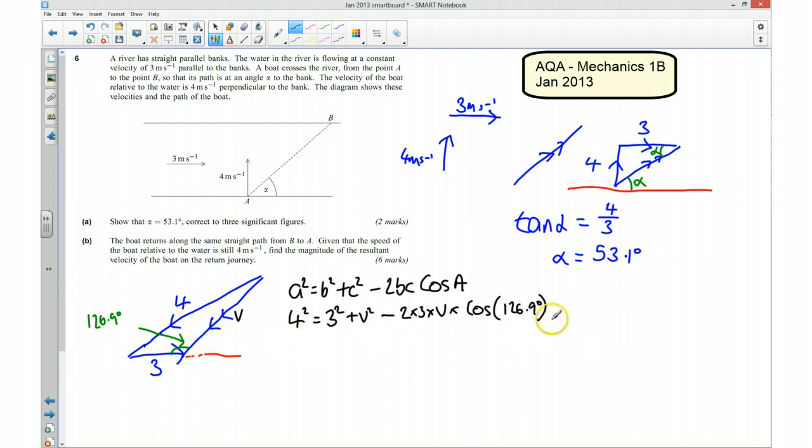What you might want to do now is see if you can stop the video and have a go at working that out to find out what v is. If you have stopped the video and you've had a go at this, what you should have ended up with is a quadratic equation where v squared plus 3.6v take away 7 is equal to 0. If you've not got that, just have a quick check and see where you might have gone wrong.